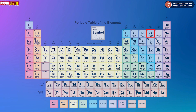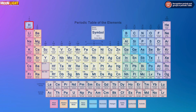Oxygen has 8 electrons. You can see there are 8 electrons — the first two electrons come to the first shell, and the next six electrons move to the second shell. So recapping: hydrogen is 1, helium is 2, lithium is 3, beryllium is 4, boron is 5, carbon is 6, nitrogen is 7, and oxygen is 8.